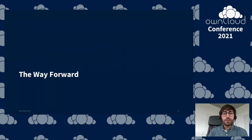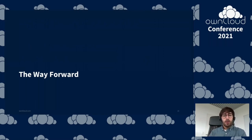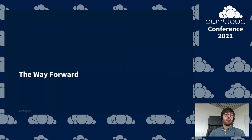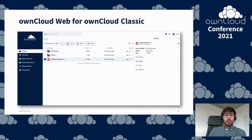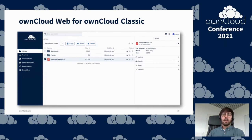Looking into the future, our main goal is to shift all current and future installations to the new product generations around OnCloud Infinite Scale and OnCloud Web for the Infinite Scale backend. This will still take some time, but OnCloud Web can already be used in OnCloud Classic installations today. If you haven't seen our new web interface, it provides a similar look and feel as the classic UI but with greatly improved usability. Users should really feel at home and get used to the new web interface quickly.